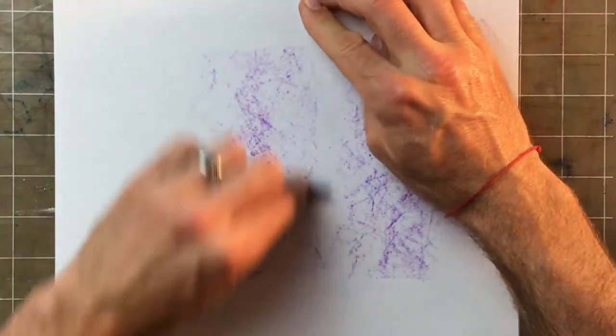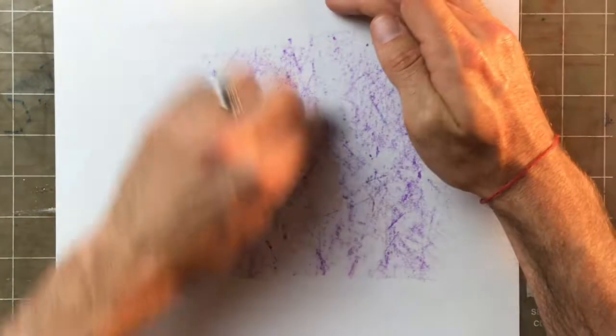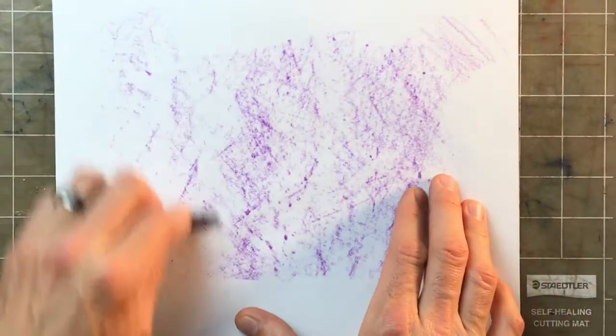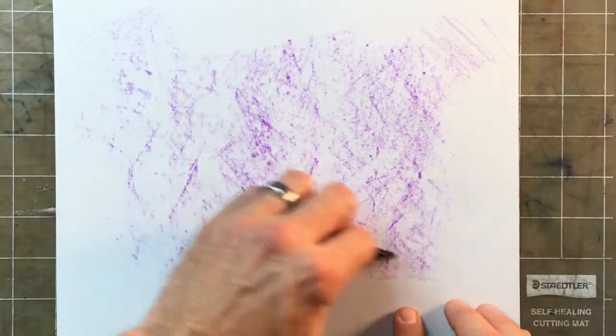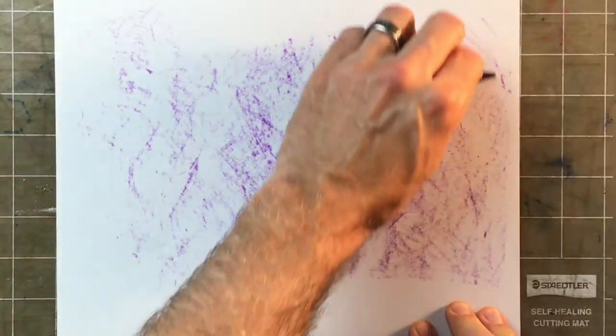...to rub on the paper, and you can tell it's actually picking up a little bit of the texture of the mat that is under my paper. It looks flat but it's actually got lots of little cuts in it because it's a cutting mat.